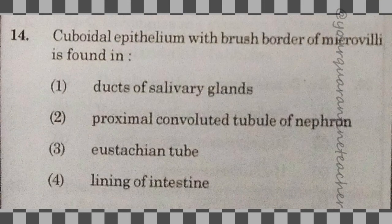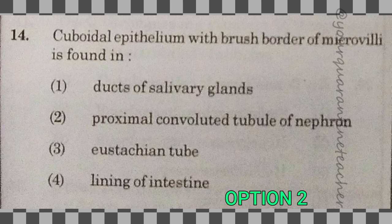14th question: cuboidal epithelium with brush border of microvilli is found in — the proximal convoluted tubule of the nephron. The answer is option 2.